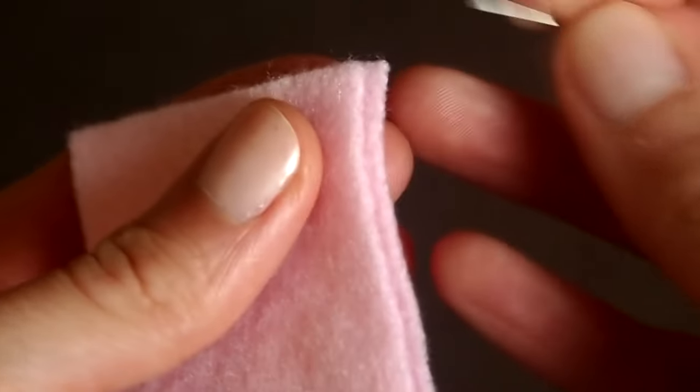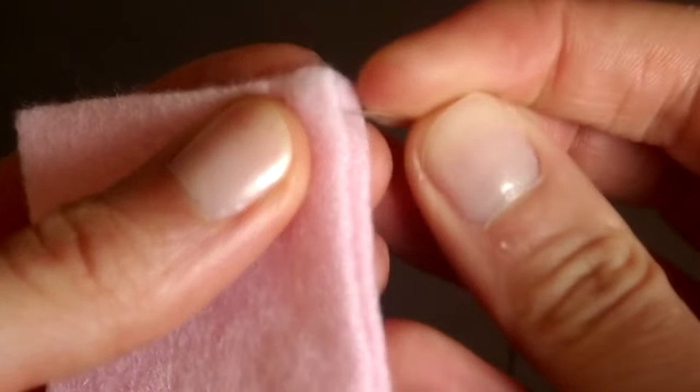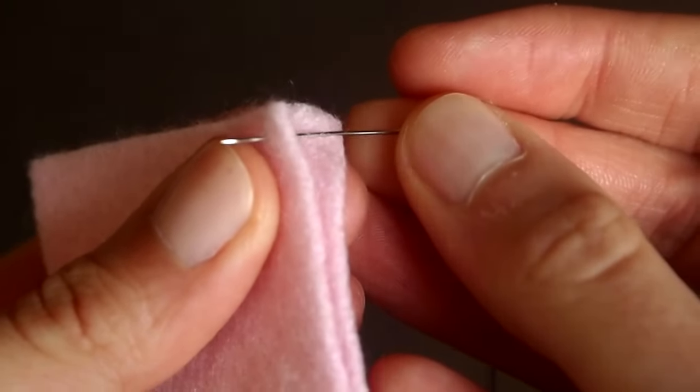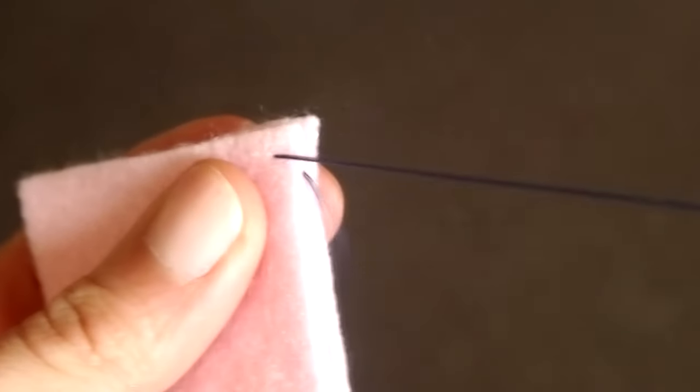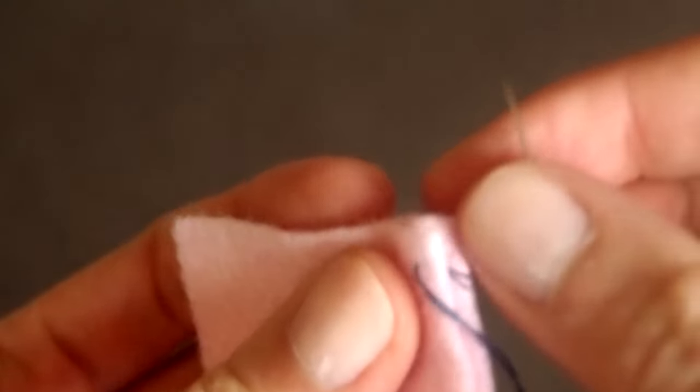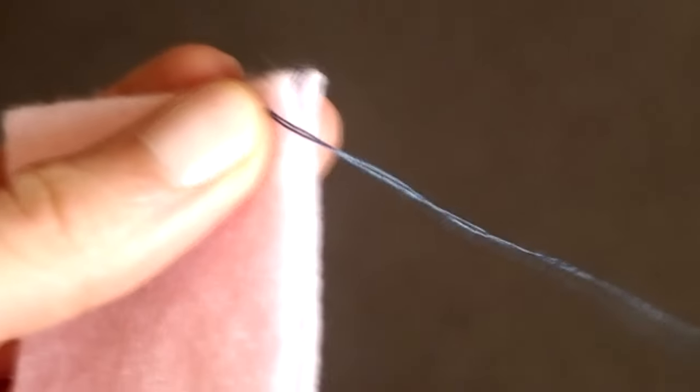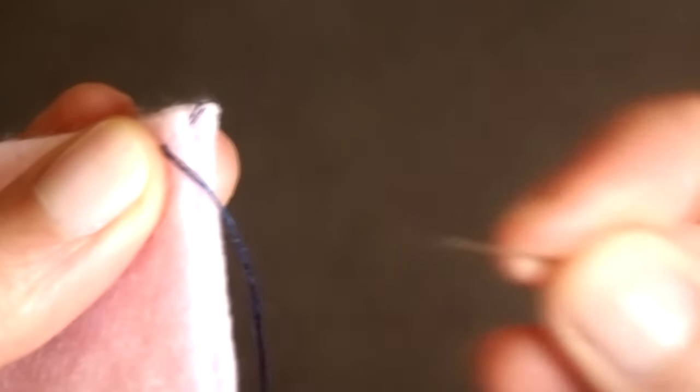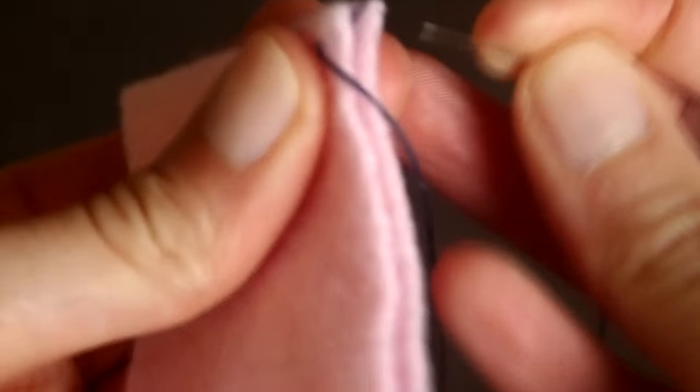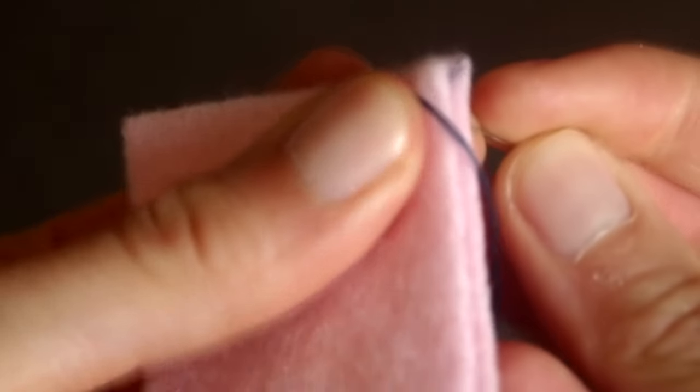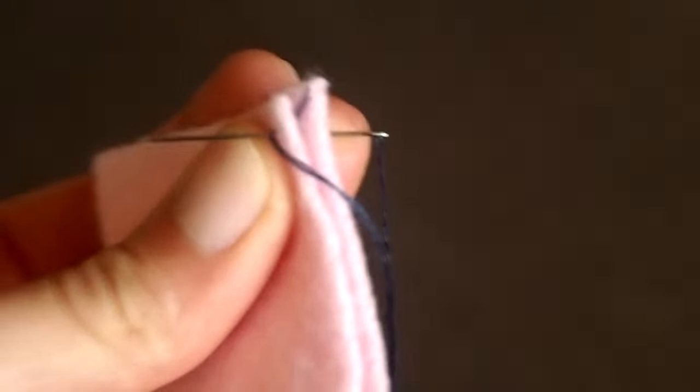So we're going to start off by putting the needle inside the fabric. As you can see I'm going inside the first layer, not the second layer, and this is because I want this little knot to be hidden inside the first layer so that it's not visible on the finished plush. Then what I'm going to do is put my needle in the second layer right in the same place where we've just sewn, just like this.